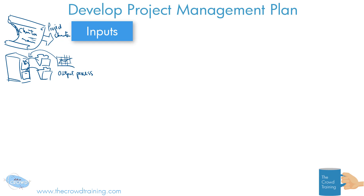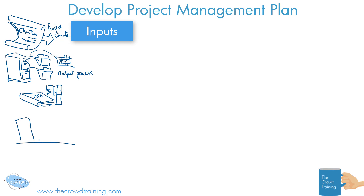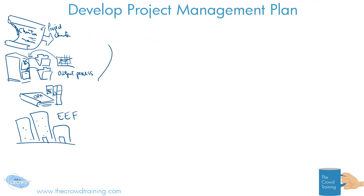Of course, you also have the various templates, policies, and procedures — I draw these as a simple binder or a group of binders representing a bunch of different policies and procedures you must follow. Those are your OPAs, your organizational process assets. And how you run things within your organization or business we consider as your enterprise environmental factors, represented as a bunch of buildings for the companies. Those then are your inputs.